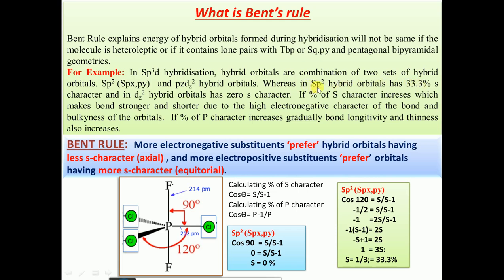The s-character can be calculated using the formula: cos θ = s / (s − 1). For sp2 hybridization, the bond angle in trigonal planar geometry is 120°. Substituting cos 120°, solving for s gives s = 1/3, which equals 33.3%. This means sp2 hybrid orbitals have 33.3% s-character.